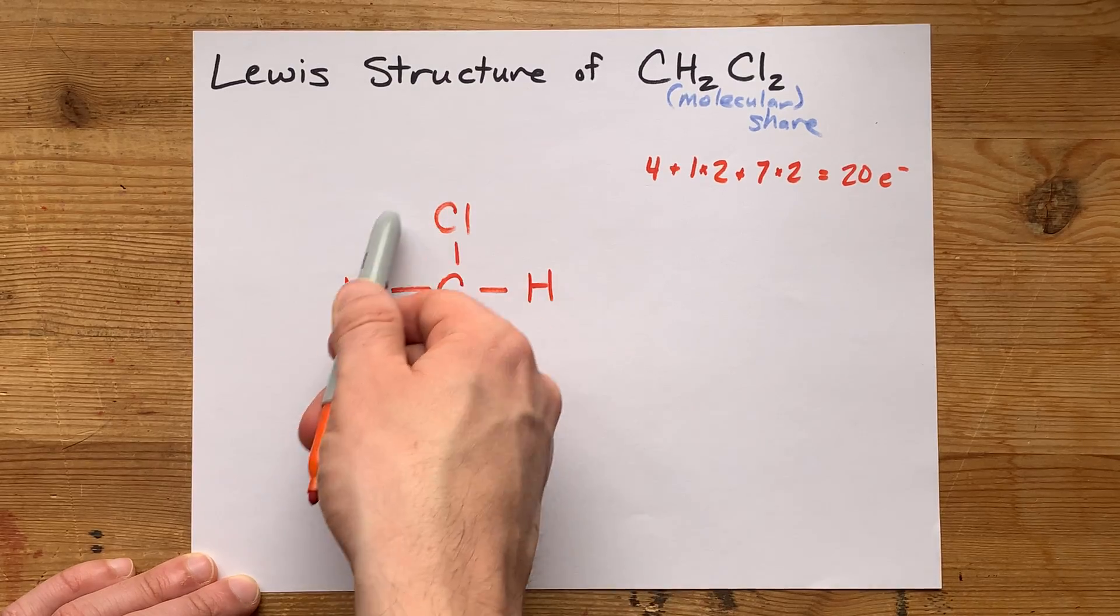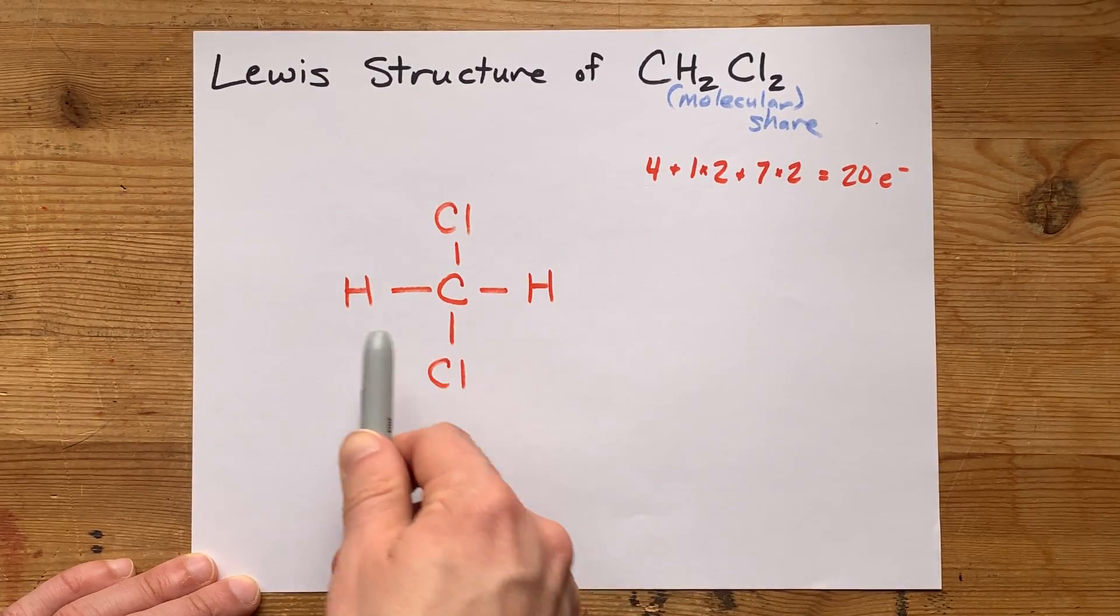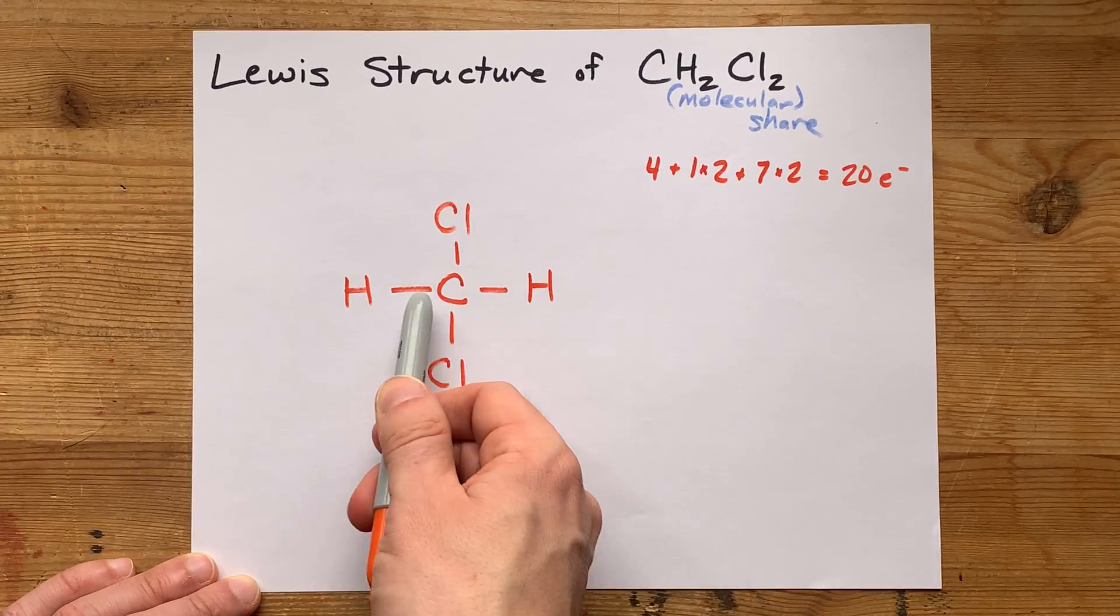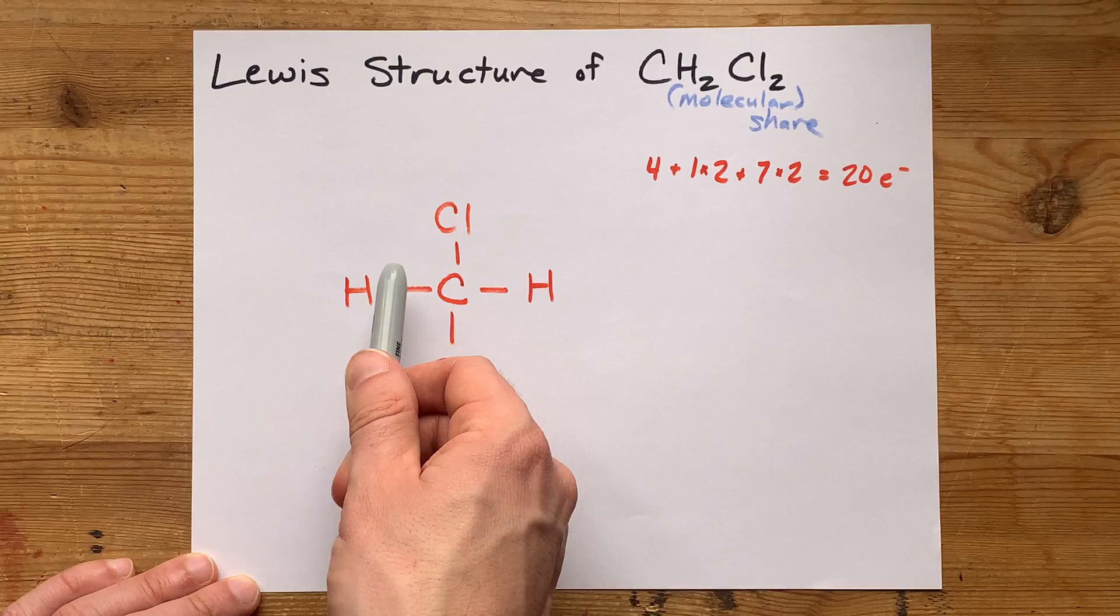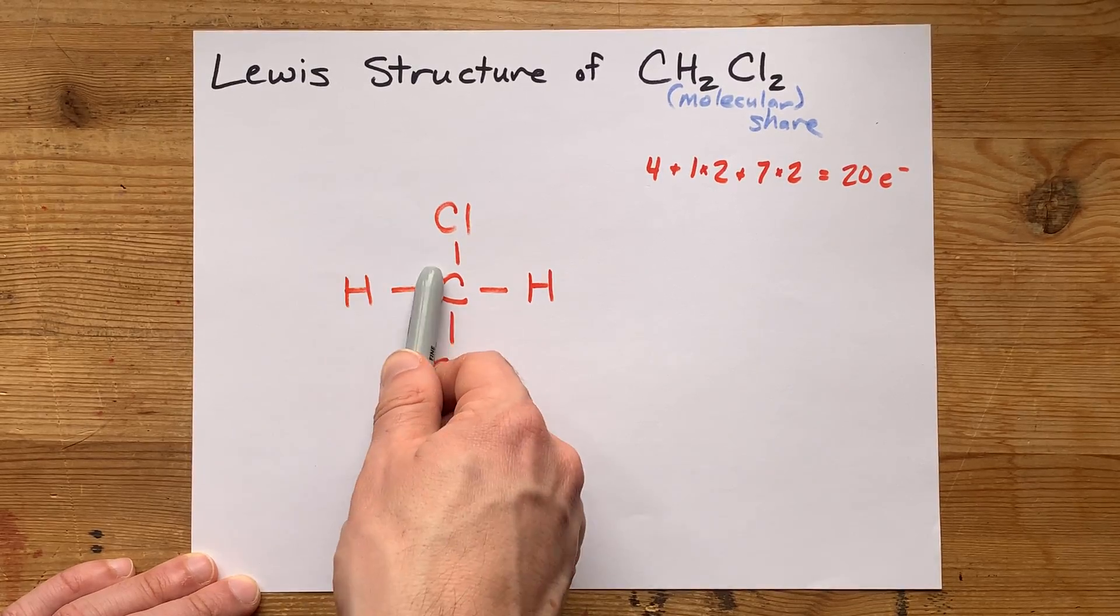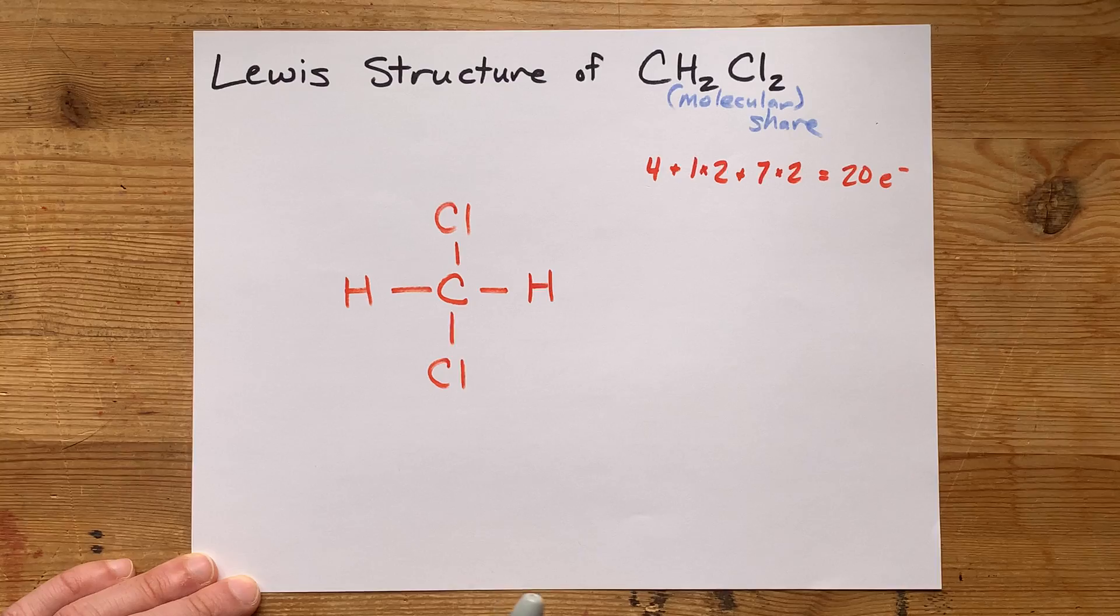So I am going to fill the octets of the outer atoms. Now hydrogen doesn't follow the octet rule. It follows the doublet rule. It's already happy with this one bond containing two electrons. So I'm not going to touch the hydrogens.